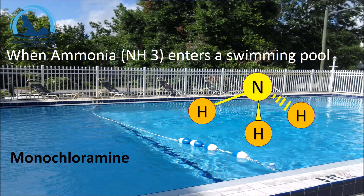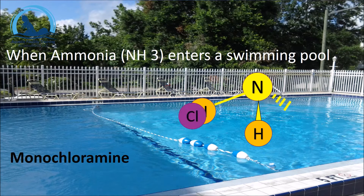When ammonia enters a swimming pool and comes in contact with free available chlorine, sometimes the free available chlorine molecule will replace one of the hydrogen molecules in the ammonia, forming what is known as monochloramine.